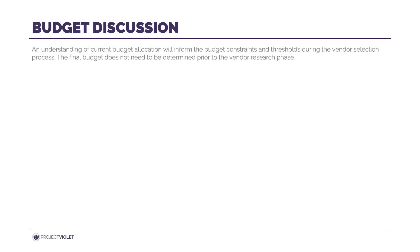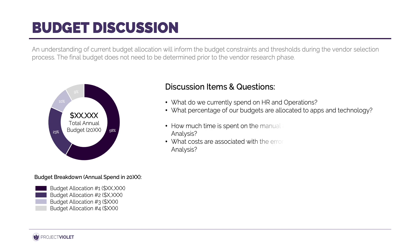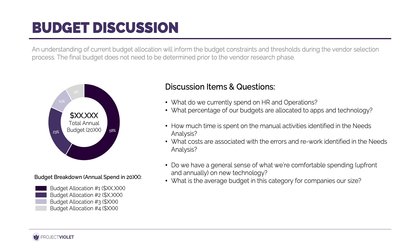In the preparation phase, it's also good to have an understanding of your budget, as this will help eliminate a lot of vendor choices in the research phase. Set up time with your CFO or whoever runs the finances and have a discussion around potential budget allocation. This template can be a facilitation tool for that meeting, showing how money is spent today on internal operations and helping set some budget parameters.